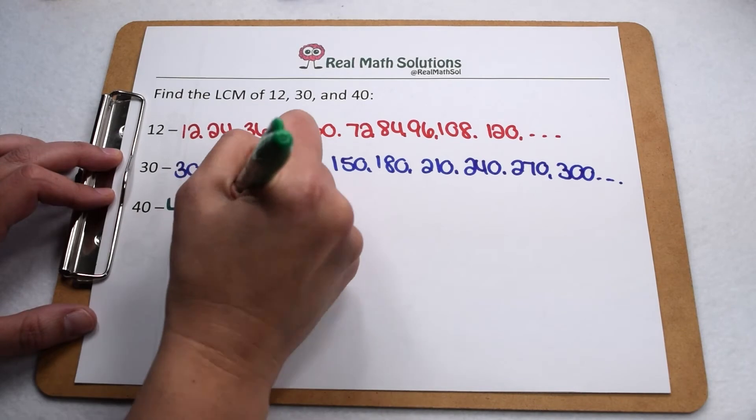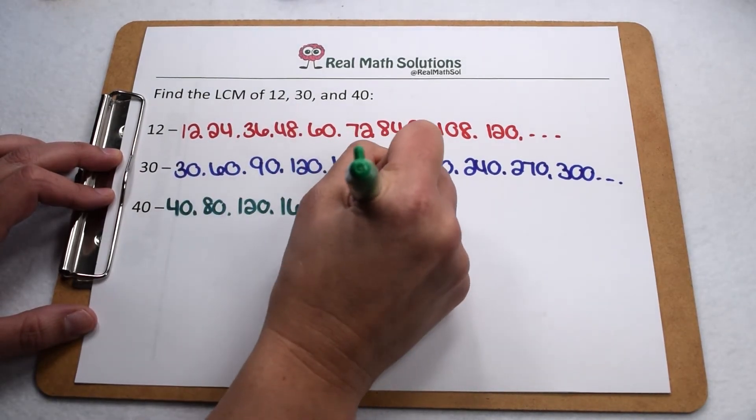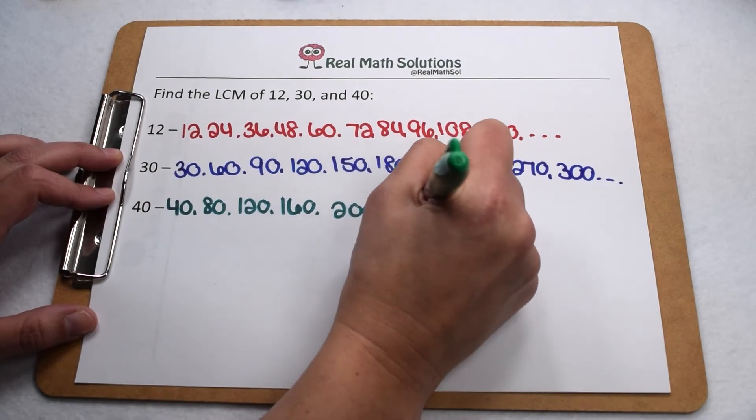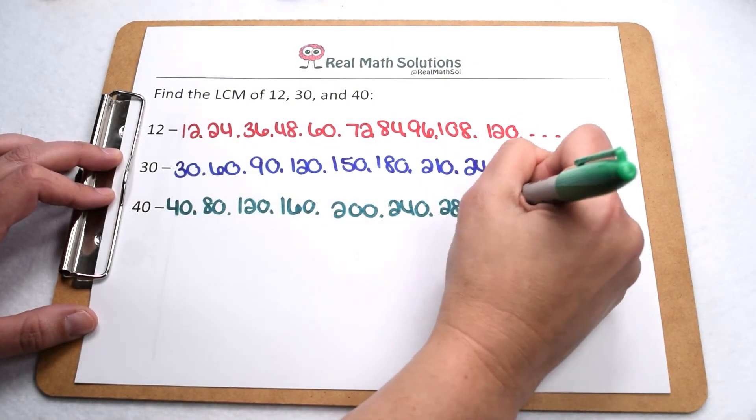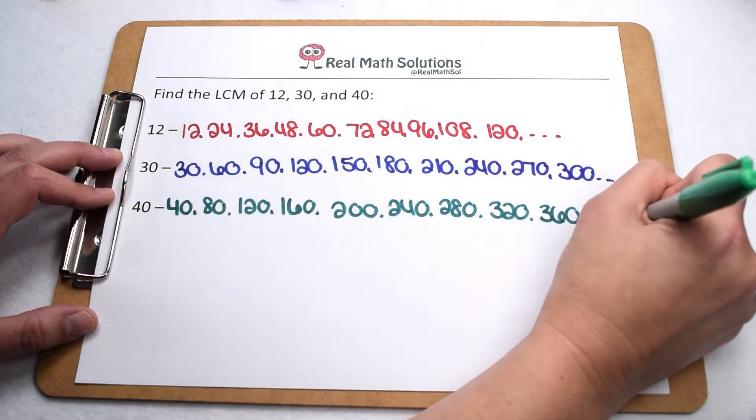We'll do the same for 40 and list out its first 10 multiples: 40, 80, 120, 160, 200, 240, 280, 320, 360, and our 10th one will be 400.